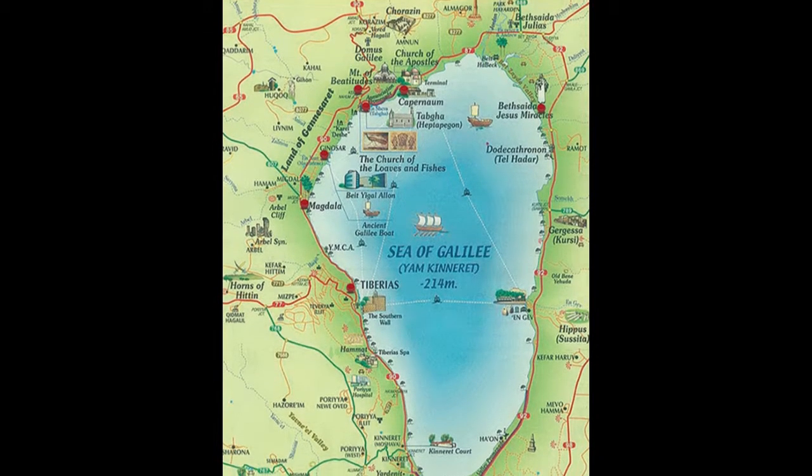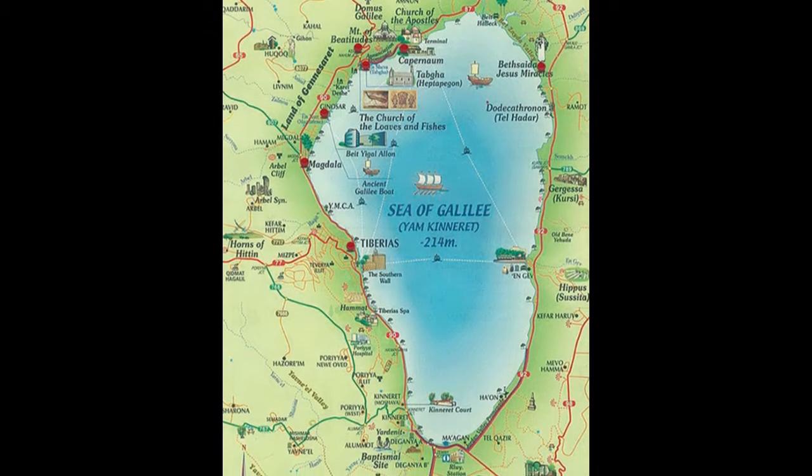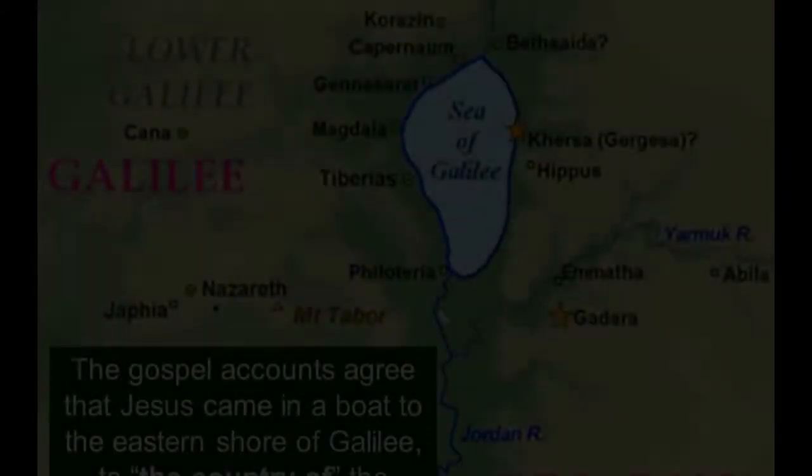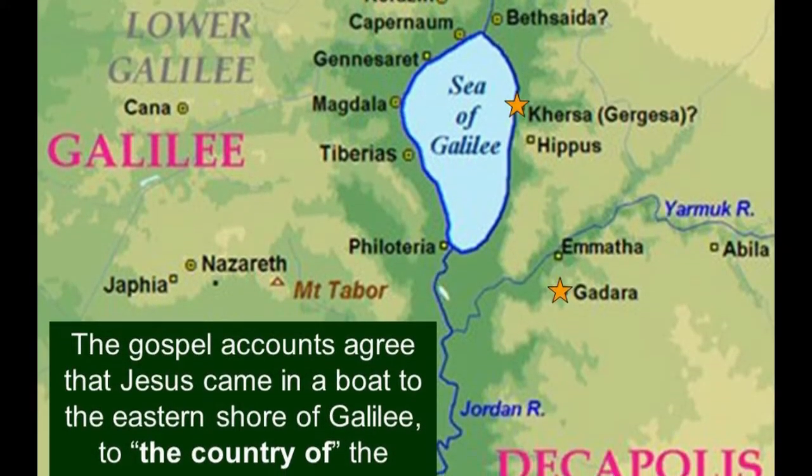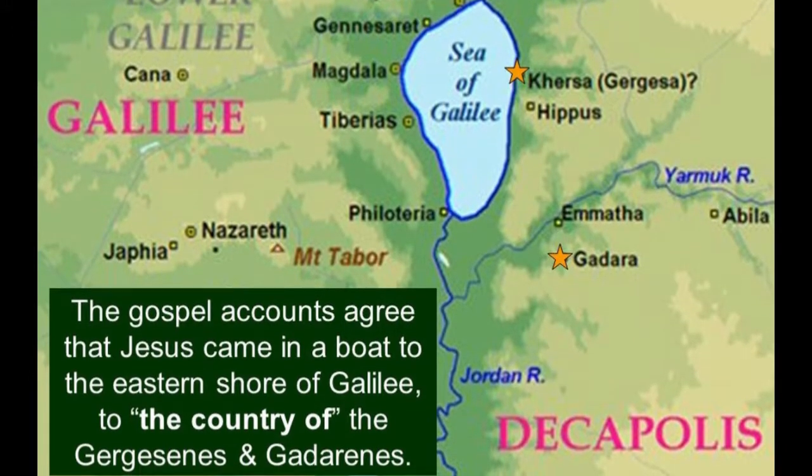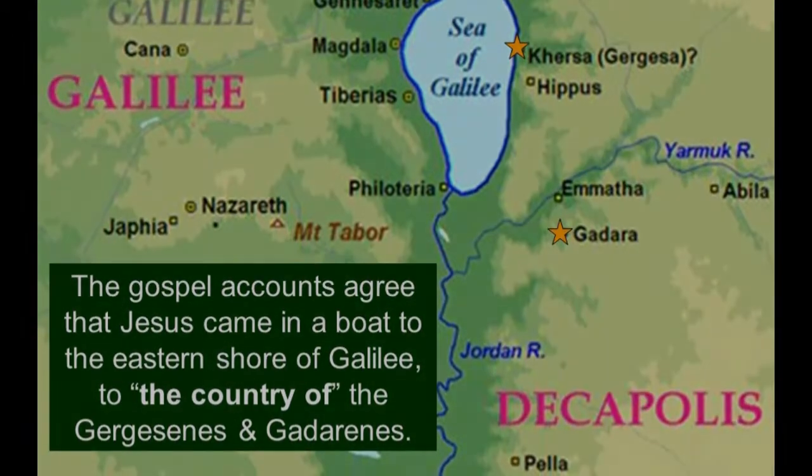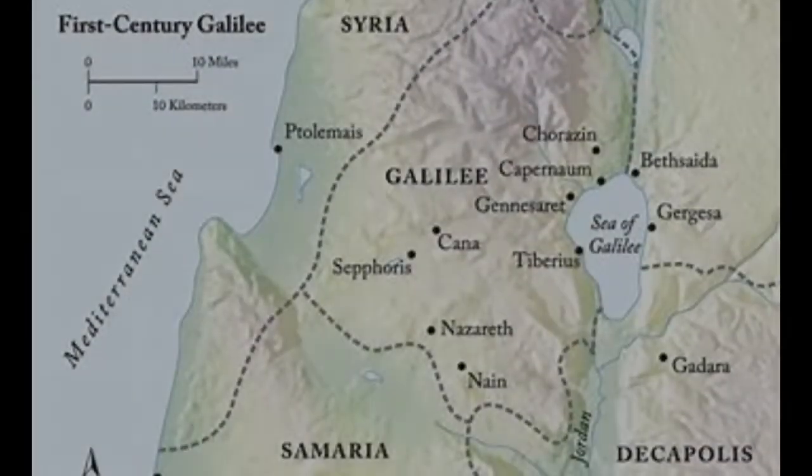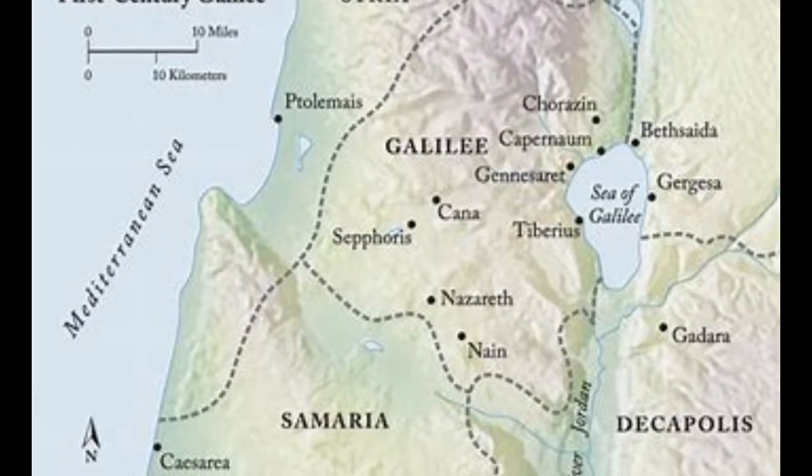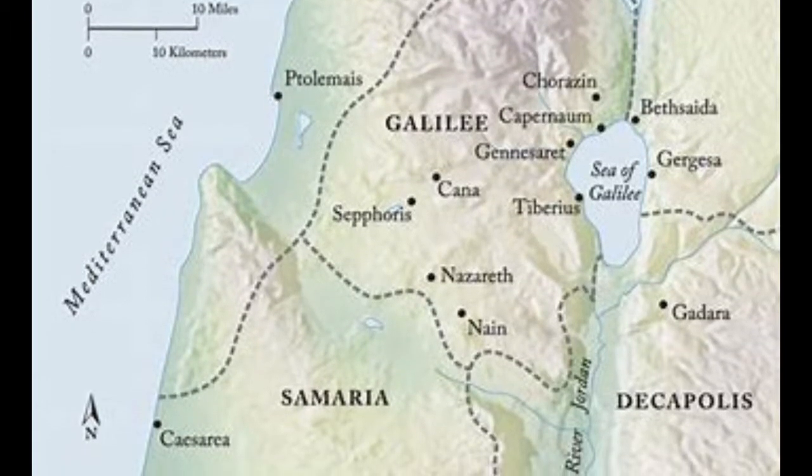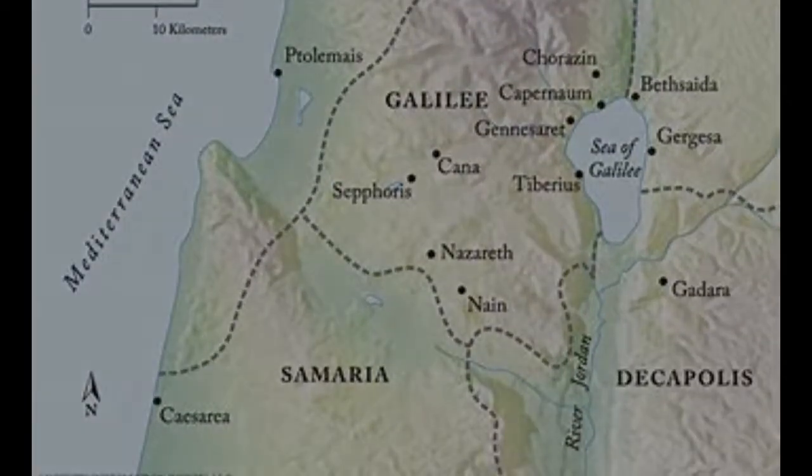This area of Gadara or Gergesa or Gerasa, you have the different names because of these different towns in the different Gospels. That region is right around five o'clock on the Sea of Galilee. We're pulling up these maps here for you so you can see where we're talking about exactly. You can still visit the place today. There's a marker there, a big stone that marks this place.